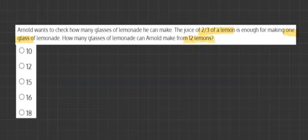Let's write this as an equation. We've got 12 lemons, and we need to divide it by two-thirds to find out how many glasses of lemonade Arnold can make.